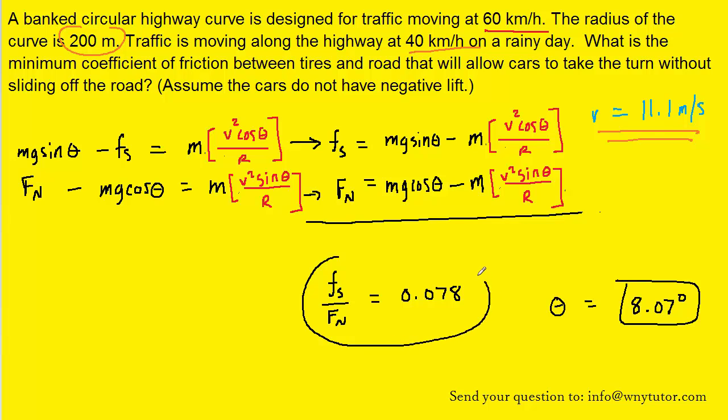And indeed that turns out to be the minimum coefficient of static friction. Let's not forget that the static frictional force equals mu sub s multiplied by the normal force. If we divide that equation by Fn on both sides, we can see that indeed mu s, the coefficient of static friction, is equal to the ratio of Fs to Fn. And there we have that ratio and the value of the coefficient of static friction.